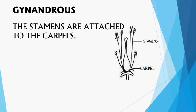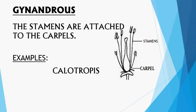In gynandrous condition, the stamens are attached to the carpels. A carpel is a unit of the female reproductive part called gynoecium, consisting of stigma, style, and ovary. In gynandrous condition, the filaments of the stamens are attached to the carpel, specifically the ovary region. This condition is called gynandrous. Example: Calotropis.